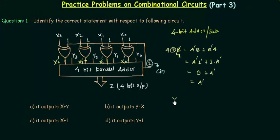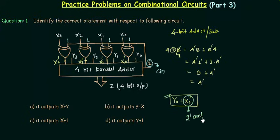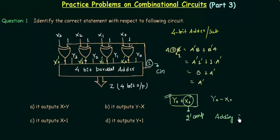What is actually happening here is that Y0 is added with X0 complement. This is actually subtraction. If you remember from the complement presentation: taking the 2's complement of a number and adding it with another number is equivalent to subtracting the original number. So if I take the 2's complement of X0 (that is X0') and add it with Y0, it is equivalent to Y0 minus X0. Adding 2's complement is equivalent to subtraction.